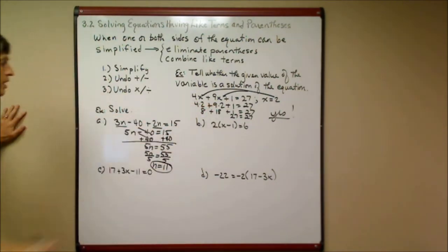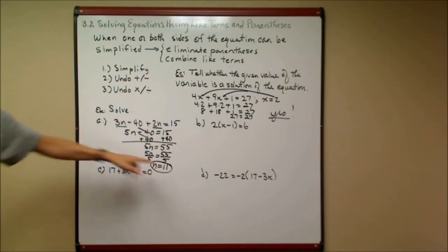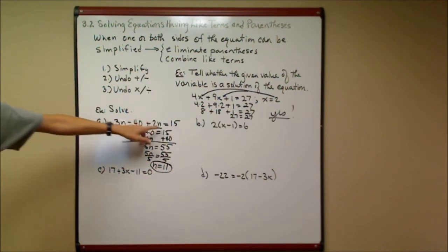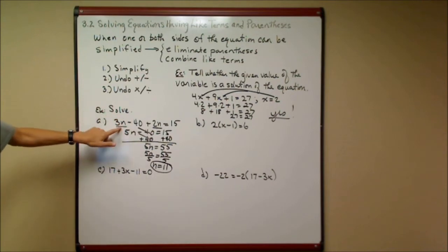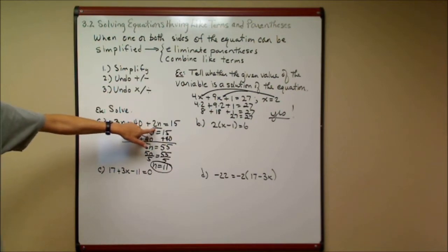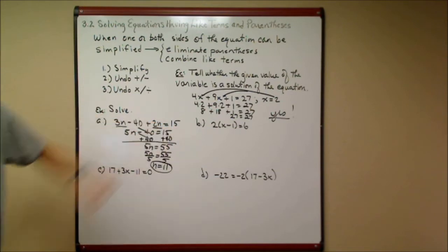Step 3, I'm going to undo any multiplication or division. I'm multiplying by 5, so I'm going to divide by 5. And I get n is equal to 11. Now, just like I did over here, I can check my work by taking the 11, plugging it in here, and plugging it in here, and seeing if I get a true statement. I'm going to do it mentally. 3 times 11 is 33. Minus 40 is negative 7, plus 2 times 11, that's 22. So negative 7 plus 22 is 15. And that, indeed, is true.